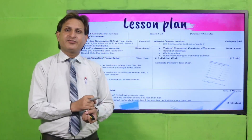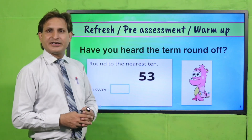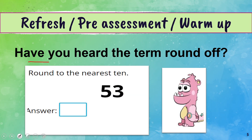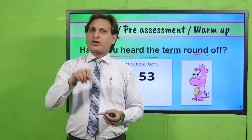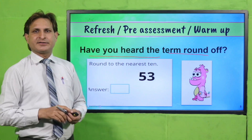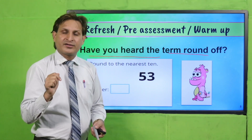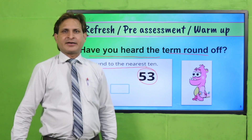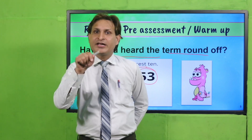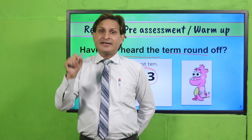अब lesson plan की तरफ। Teachers lesson plan description box में से download कर सकते हैं। Pre-assessment की तरफ चलते हैं। Have you heard the term 'round off'? कहाँ पर सुनी थी? किस unit में आपने rounding off सीखी है? Write it on your notebook and show it to your teacher. आपने किस class में, कहाँ पर, किस जगह सीखी थी rounding off? Round कैसे करते हैं? Observe करें — round to the nearest ten। 53 को हर student ने individually round करना है और अपनी teacher को दिखाना है।